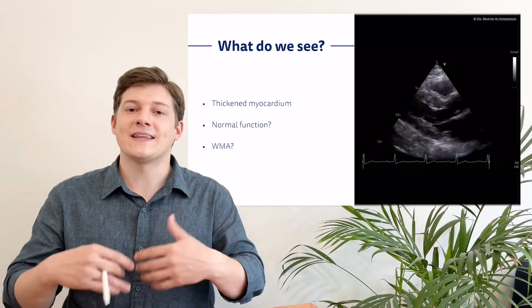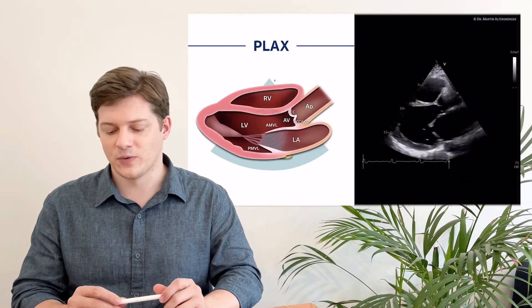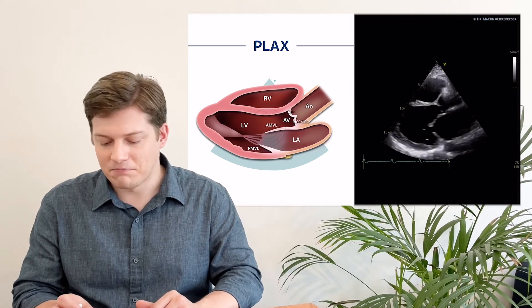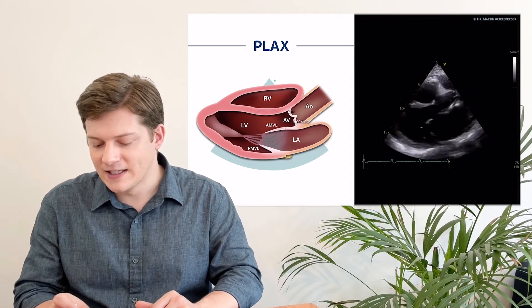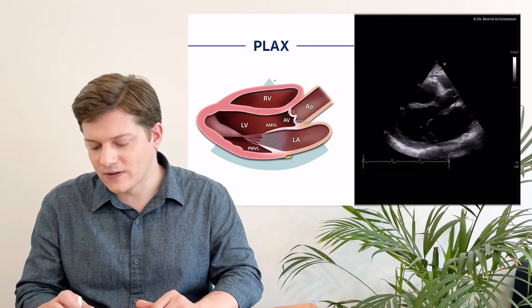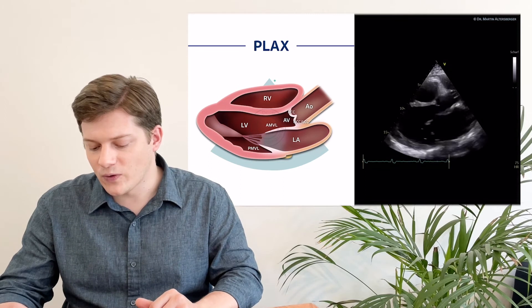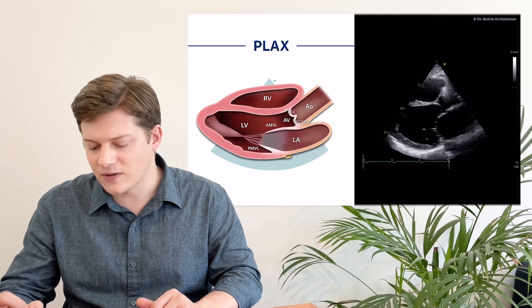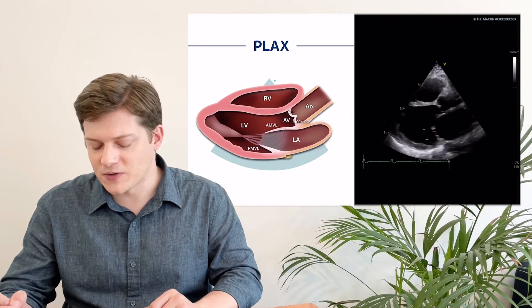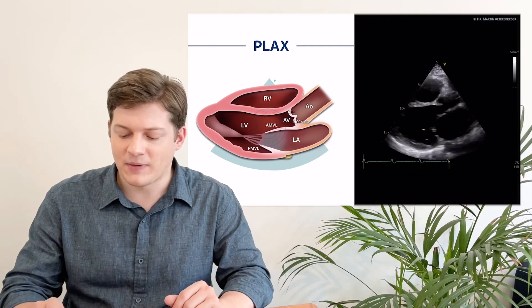Let's move on to another pathologic example, and every one of you will already know that this cannot be normal. In this case, we have the interventricular septum over here — it's basically akinetic, it's very, very thin, it looks like a scar. We do have the posterior lateral wall, which is a bit thicker. Left ventricular function seems to be impaired. Also focus on the valves: here is the aortic valve, the ascending aorta is normal in size, and this is the mitral valve. So in this view, you have plenty of information about how this patient might be doing.